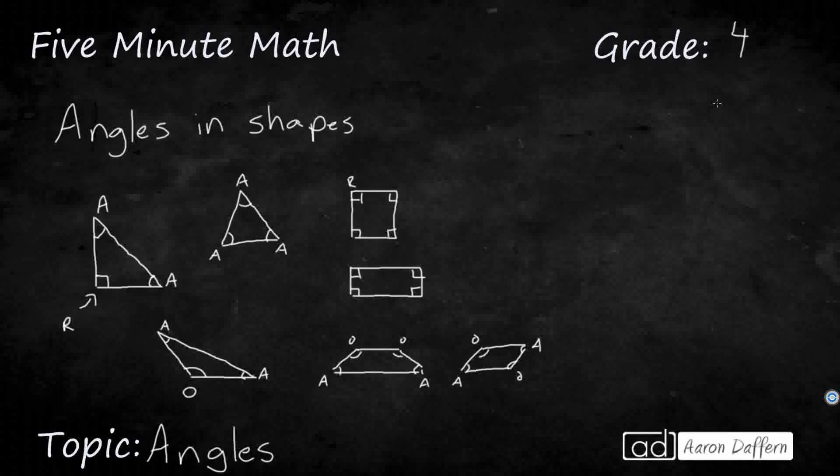Now, I can draw a right trapezoid. Check this out. A right trapezoid, and it's got all three types of angles. It's got two rights, it's got an obtuse, and it has an acute.